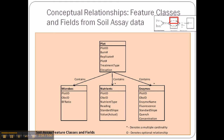First, I'm going to talk about the soil assay data. The soil assay data is connected to the plot attribute table via the plot ID. The plot ID is the primary key, and it's also connected to the observer ID as a secondary primary key, which I'll talk about later.